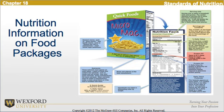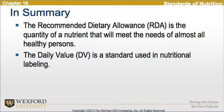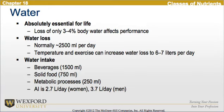In summary, the recommended dietary allowance is the quantity of a nutrient that will meet the needs of almost all healthy persons. The daily value is a standard unit used in nutritional labeling. Water is absolutely essential for life, and loss of only 3% to 4% of body water affects performance. Water loss is approximately 250 milliliters per day, and temperature and exercise can increase water loss to 6 to 7 liters per day.